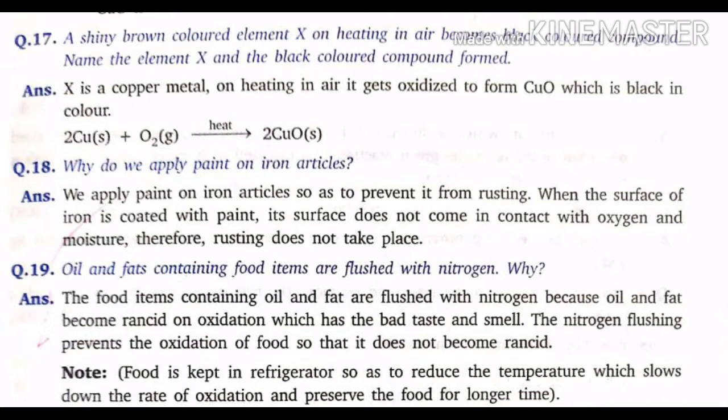Answer: X is copper metal. On heating in air, it gets oxidized to form CuO, which is black in color. The equation for the reaction is: 2Cu (solid) + O₂ (gas) → heat → 2CuO (solid).